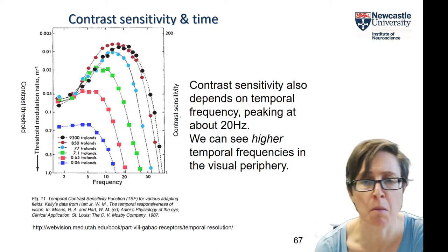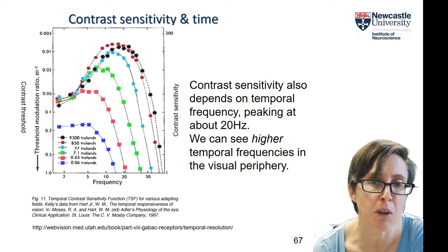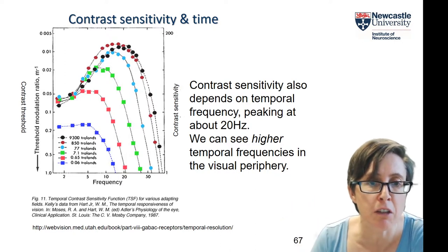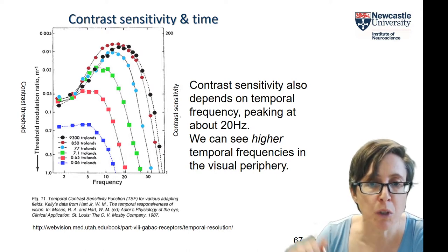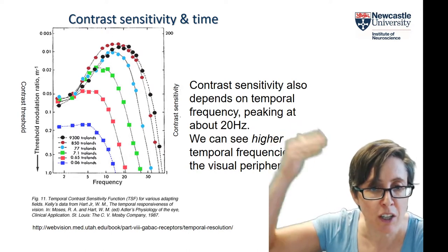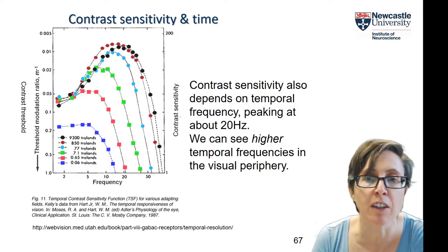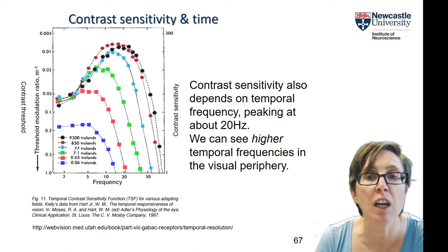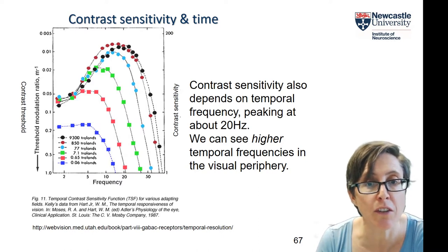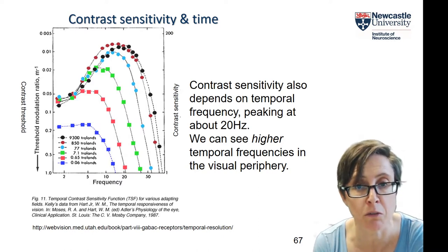This is something we've probably all experienced. If there's an annoying flickering fluorescent light — maybe the bulb's going — and as you try to work, the light above your head is flickering really irritatingly, but when you look directly at it, it appears steady. That's because in your fovea you're less sensitive to flicker than you are in the periphery of your visual field.